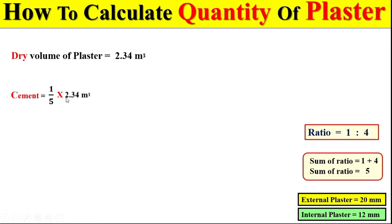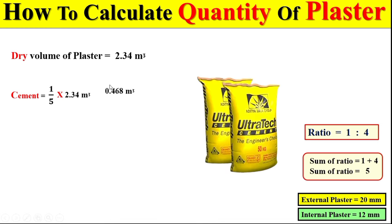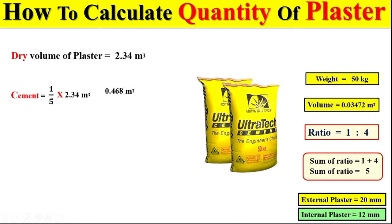To find the total volume of cement, we multiply the dry volume by 1 over 5 to get the total volume of cement in cubic meters. If you want to calculate this volume in terms of bags or kilograms, remember the weight of 1 bag of cement is 50 kg and the volume of 1 bag of cement is 0.03472 cubic meters. If we divide this volume by the volume of 1 bag of cement, we get the total number of cement bags.